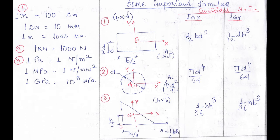Good morning, dear students. Today I will discuss some important formulae which you have to remember for the GATE exam. Let us start with the very basic unit conversions: 1 meter equals 100 centimeters, 1 centimeter equals 10 millimeters, and 1 meter equals 1000 millimeters.